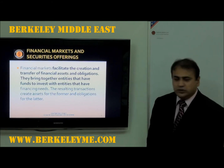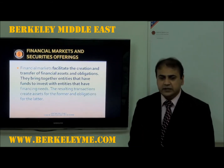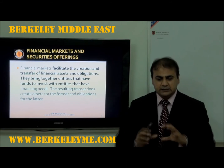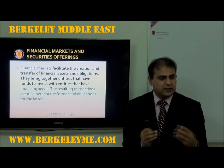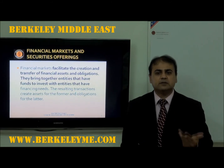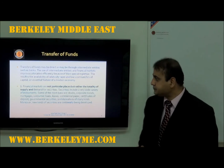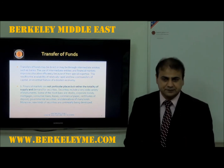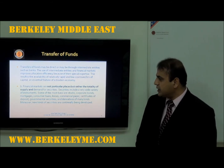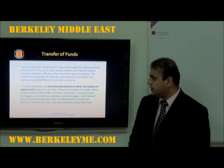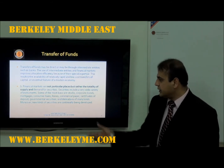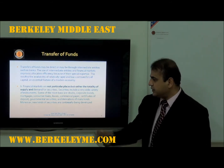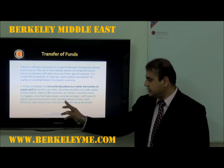Financial markets bring together entities that have funds to invest with entities that need financing. Simply put, a bank is a platform linking lenders and borrowers, and all financial markets work on this mechanism. Financial markets are not particular physical places — they can be virtual — but represent the totality of supply and demand for securities. Securities include a wide variety of instruments: stocks, corporate bonds, mortgages, consumer loans, leases, commercial papers, certificates of deposit, government securities, and derivatives.